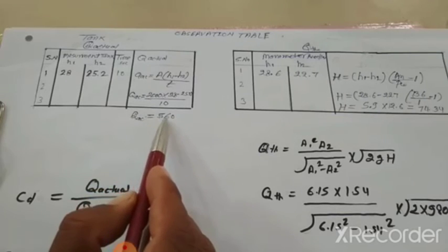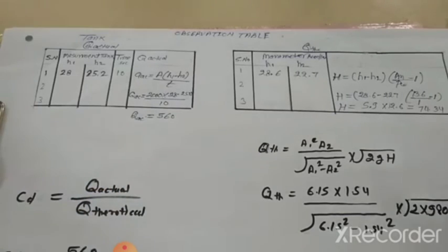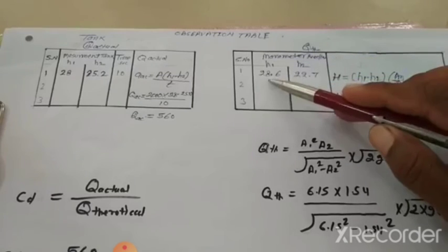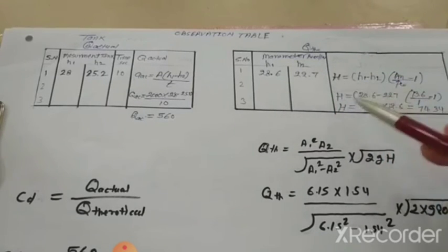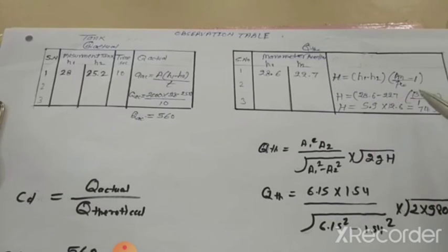So this is the observation table where we have to write down the value of the H1, H2 time in second and QH value. I have already calculated the value. Note down on your observation table. I hope you have understood the concept of venturimeter. Thank you.